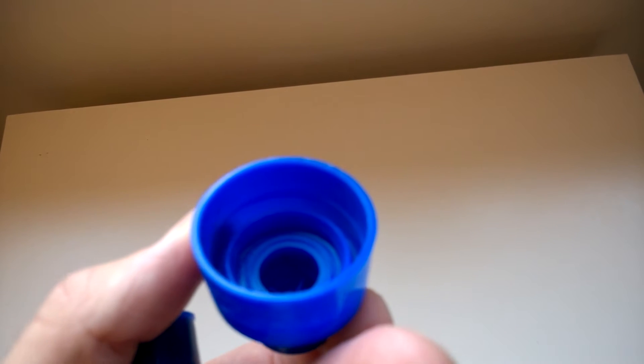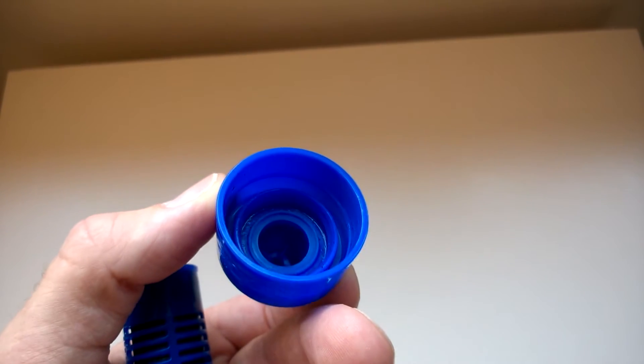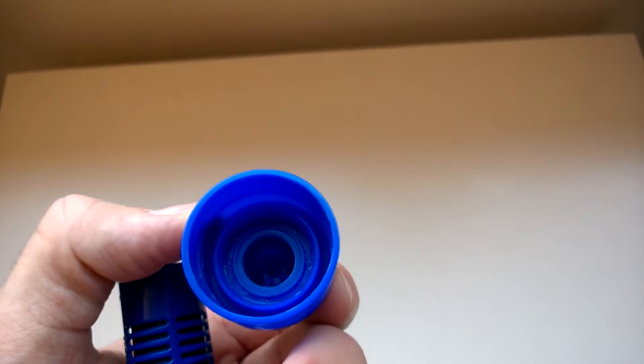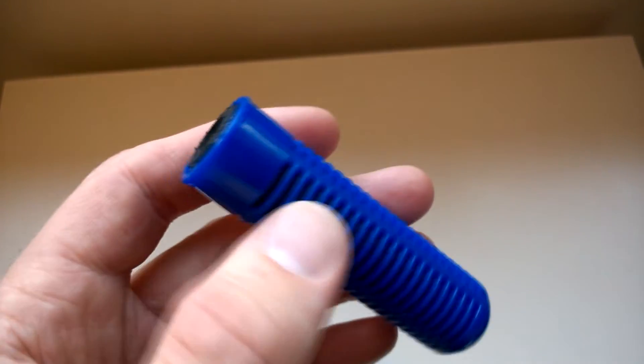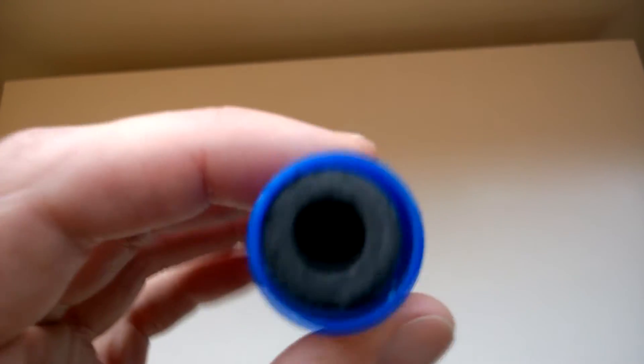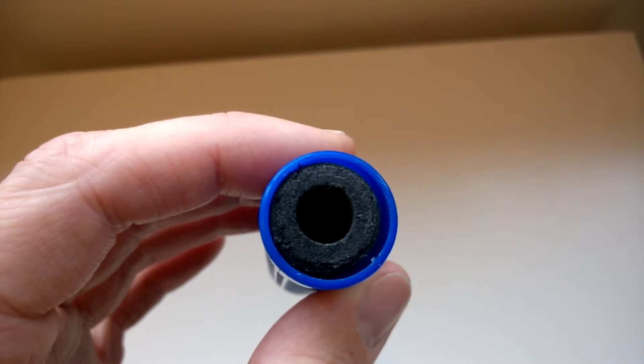There's a lip inside there which you can just about see. And as you drink, all of the water goes through, apparently goes through all of these grills and through the carbon. So you can see the tube in there.